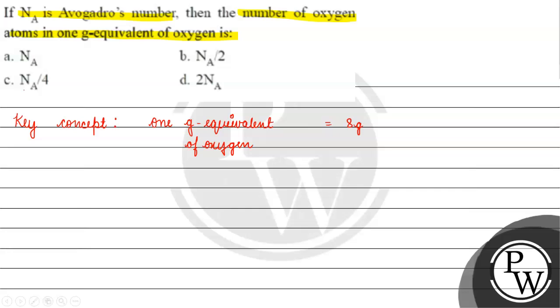See, oxygen exists in the form of oxide ion. Now if we talk about its atomic mass, it is 16 gram per mole. If we calculate atomic mass by N factor, the N factor will be 2.